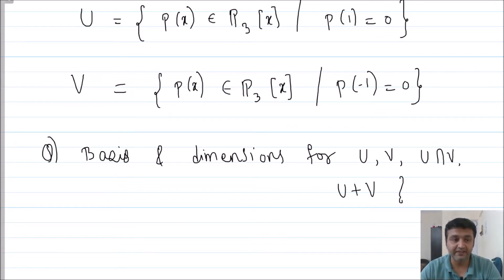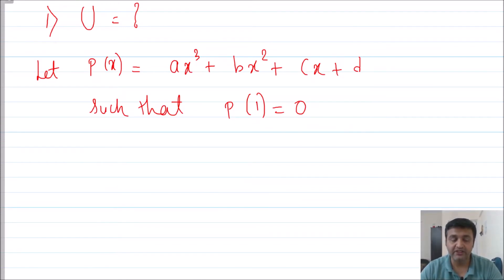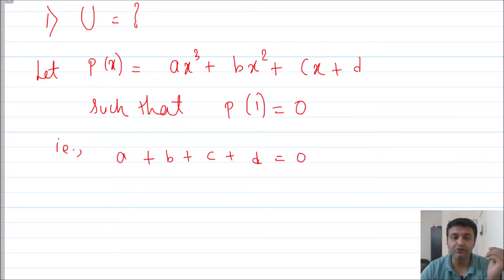Let's address the first question: the basis and dimension of subspace U. U consists of polynomials of degree at most 3, so p(x) = ax³ + bx² + cx + d. The condition given is p(1) = 0. You replace x by 1 and get a + b + c + d = 0.